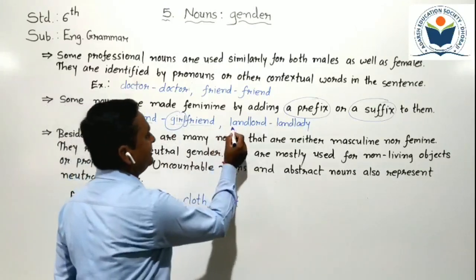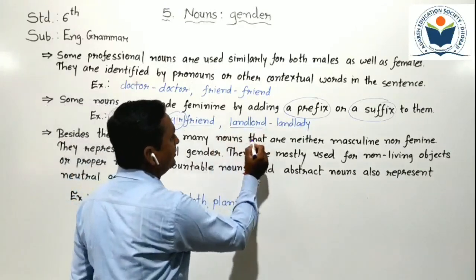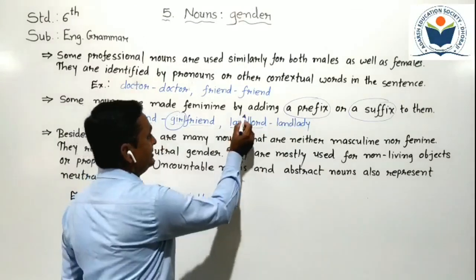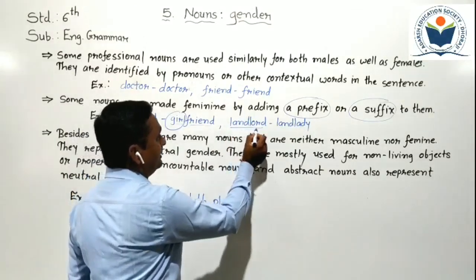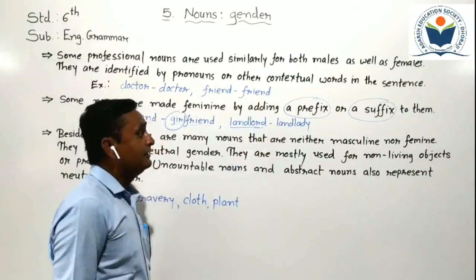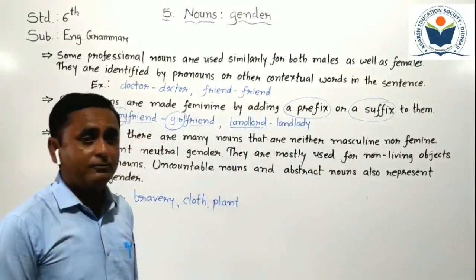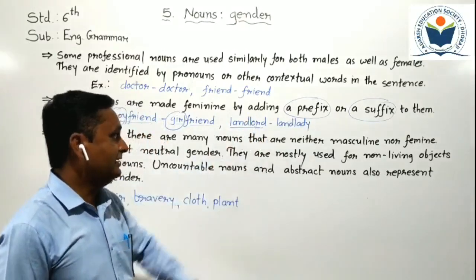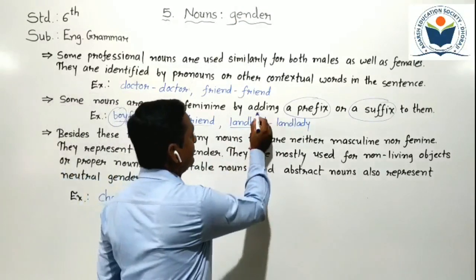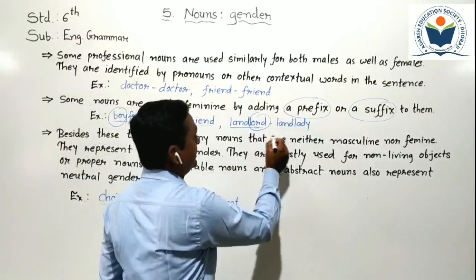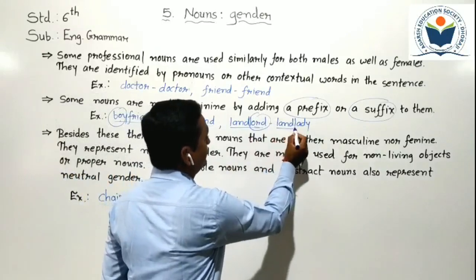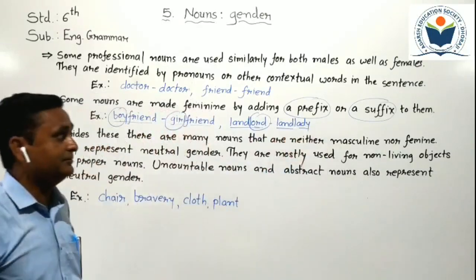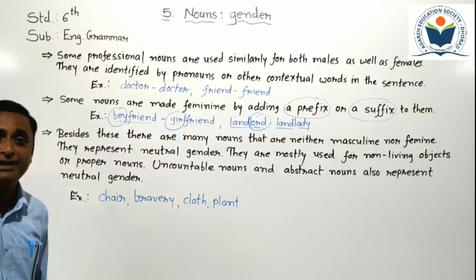Next example: 'landlord' — here 'lord' is added as a suffix. We have to change the gender, so 'land' remains the same and we add 'lady' to form 'landlady.' So it becomes a feminine gender noun.